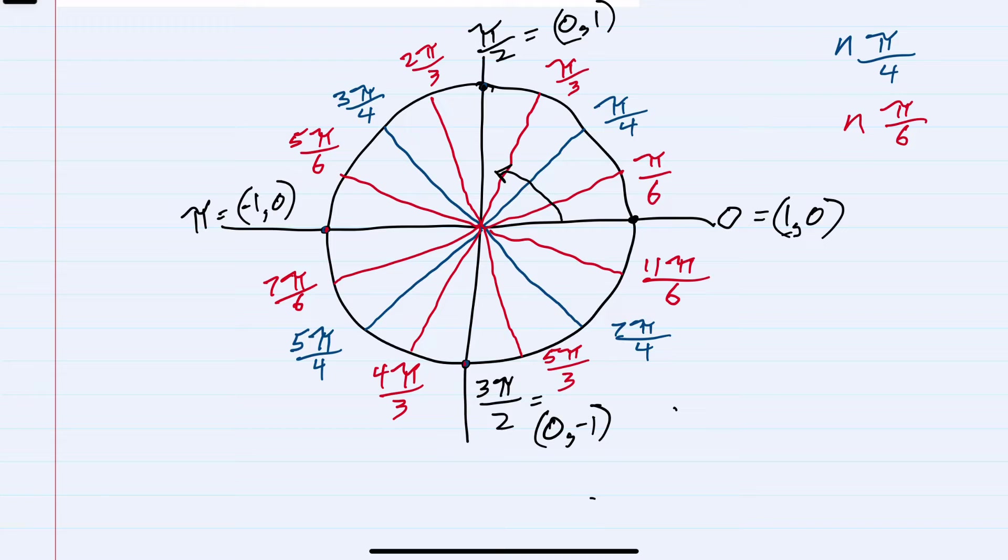We can think of that pattern as one being the square root of 4 over 2. The next would be the square root of 3 over 2. Then the square root of 2 over 2.